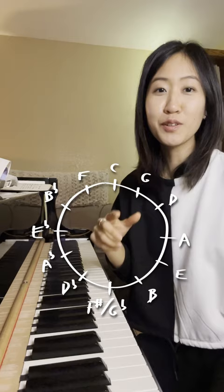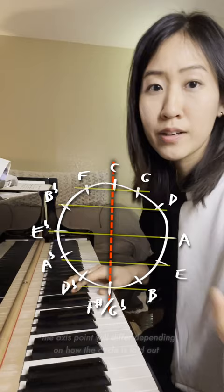Shall we talk about negative harmony? You basically take pitches, arrange them in a circle with this particular axis point, and then you can convert pitches to create new chords. F major becomes G minor, E minor becomes A flat major.